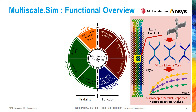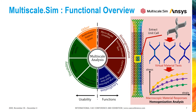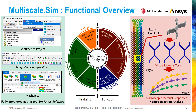Then, the virtual material test with an external load is performed while satisfying those conditions. These animations show the image of deformation shape for uni-axial tension test for two directions and pure shear test. Multiscale.sim can freely define any deformation load. The output of these virtual material tests is macroscopic material response — a stress-strain curve is shown. Finally, we can get equivalent material constants as a result of curve fitting.